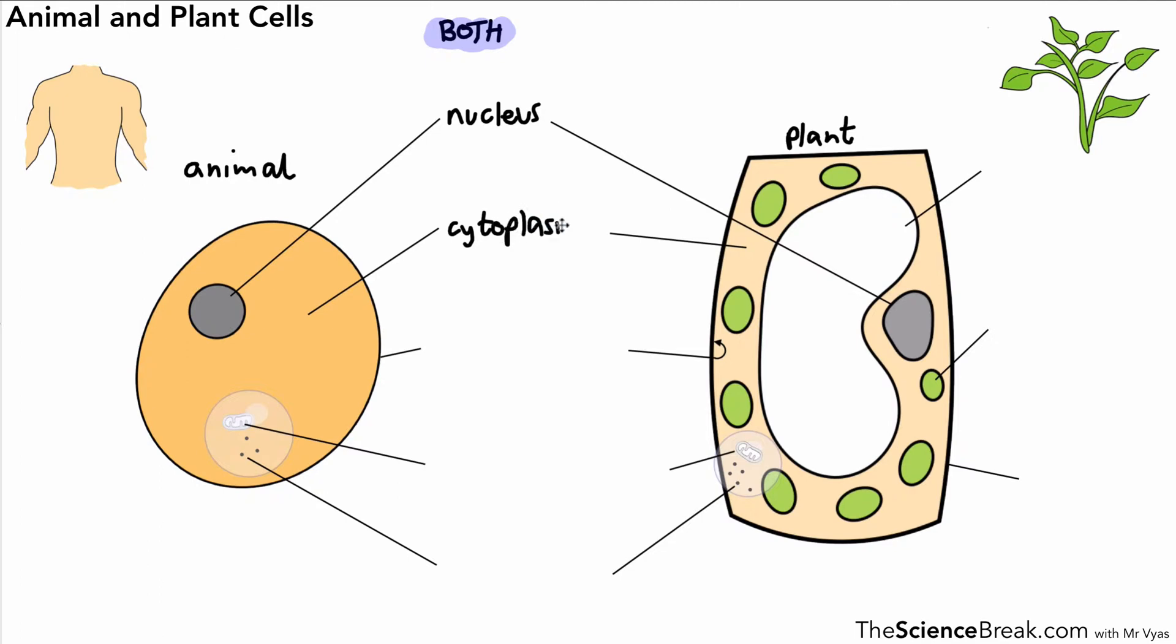Next one down is the cytoplasm, and the next one just inside the plant cell and on the outside of the animal cell is the cell membrane. Then we have these parts I've tried to show as magnified—these are the mitochondria. Mitochondria is plural; singular is mitochondrion.